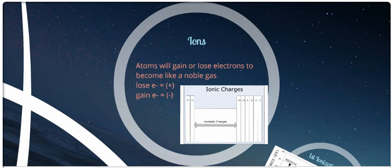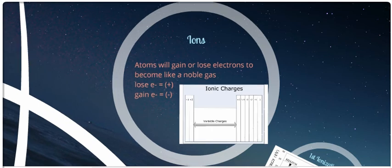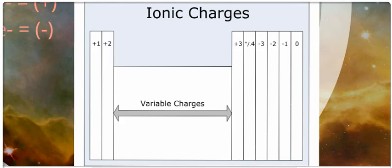Ions will gain or lose electrons to become more like noble gases and become more stable. If you lose electrons, you become positive; if you gain them, you become negative. Groups 1, 2, and 3 will lose electrons and get a positive 1, 2, and 3 charge respectively. Groups 15, 16, and 17 will gain electrons, gaining a minus 3, minus 2, and minus 1 charge respectively.